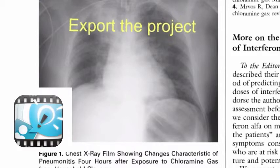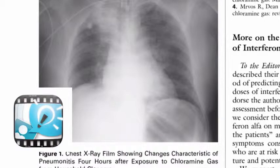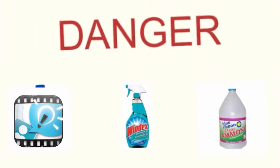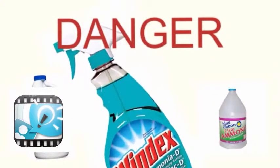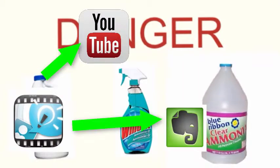Step 3 is to export the project. Explain Everything offers many options to export the finished project. You can email a link or export in Explain Everything's XPL format, or as PDFs, images, and videos, and can be saved to the iPad camera roll, YouTube, Evernote, Dropbox, or Google Drive. I have created a sample movie project on the element nitrogen, which runs about 12 and a half minutes, to help my students get familiar with the features of Explain Everything.